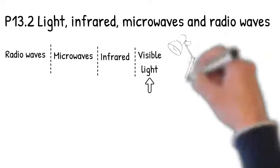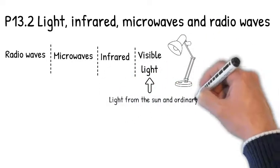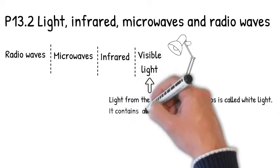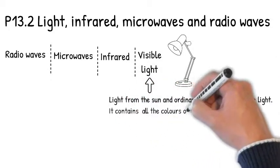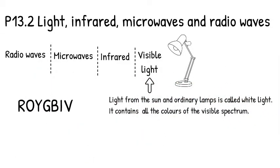Let's now take a closer look at visible light. Light from the sun or an ordinary desktop lamp is called white light — it contains all of the colors of the visible spectrum. You can learn the order of the colors of the visible spectrum with the mnemonic ROYGBIV, or 'Richard of York gave battle in vain.'